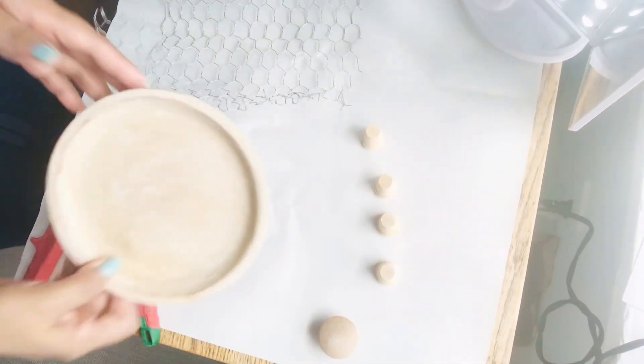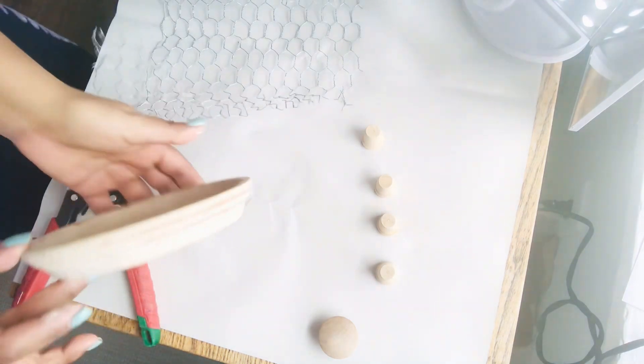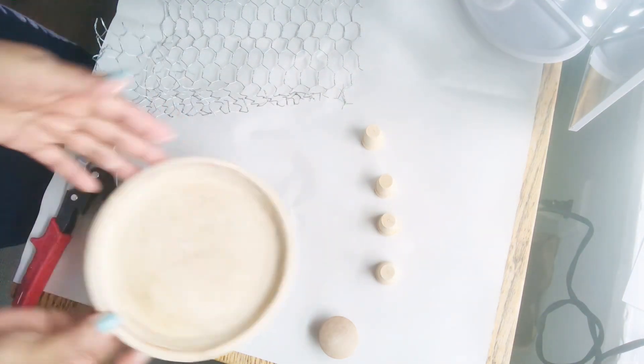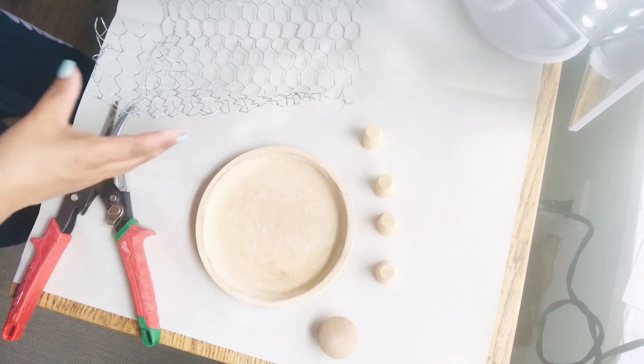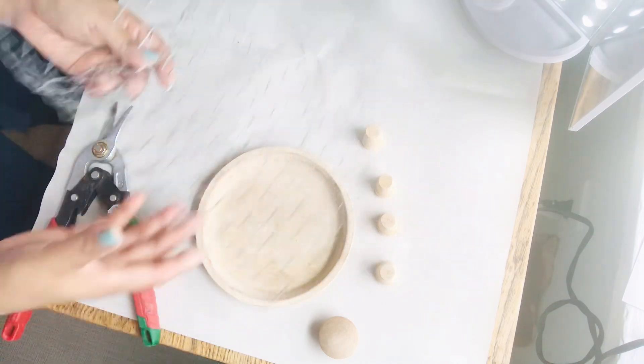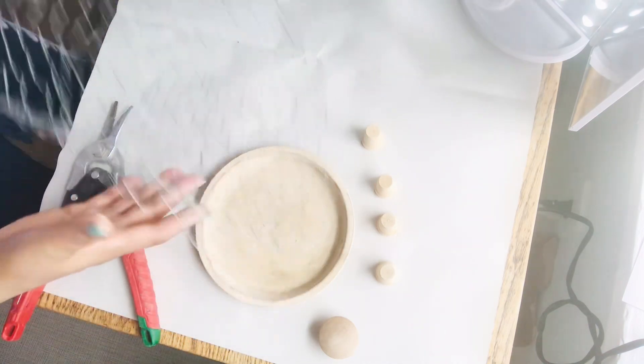Next I'm going to repurpose this saucer terracotta that I DIYed a long time ago and a piece of chicken wire that I had in my stash. I'm planning to make a wire clutch, this is my first time so I hope it goes well.